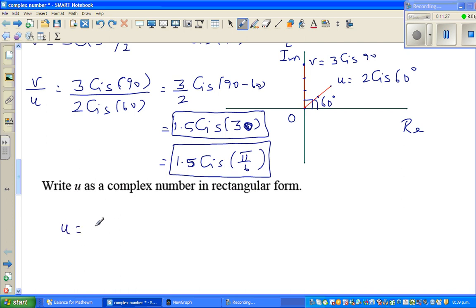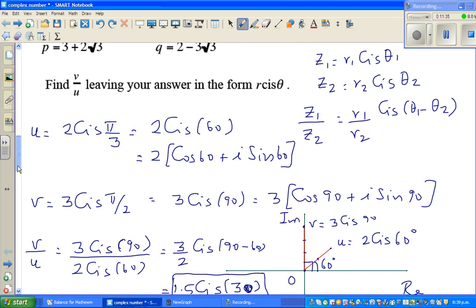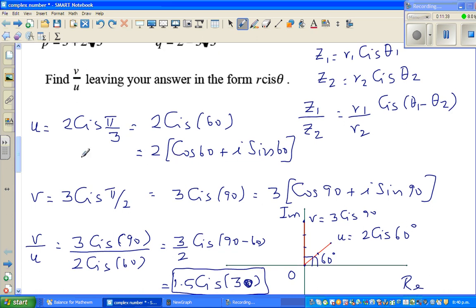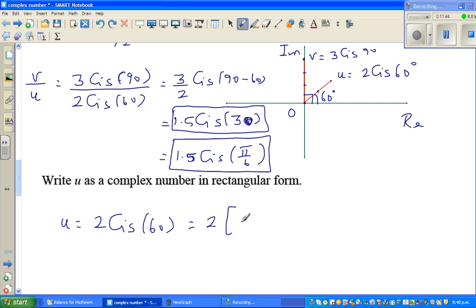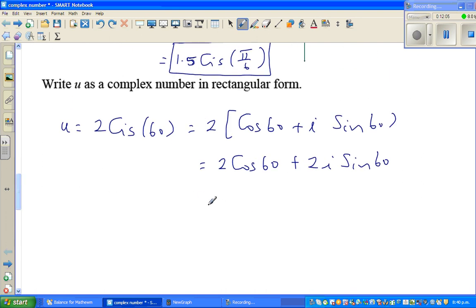Now U, we know, is 2 cis 60. We have written like this. So U is nothing but 2 times cos 60 plus i sine 60. So this is 2 times, cos of 60 is half, 2i times sine 60 is root 3 over 2. So this is 1 plus, this 2 and this 2 gets cancelled, 1 plus root 3 i. So the calculator will give you the answer is nothing but 1 plus 1.73 dot dot dot i. This is the answer.